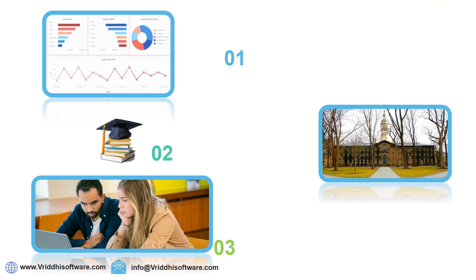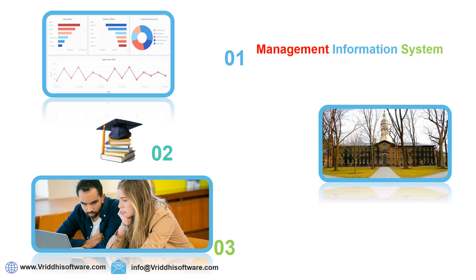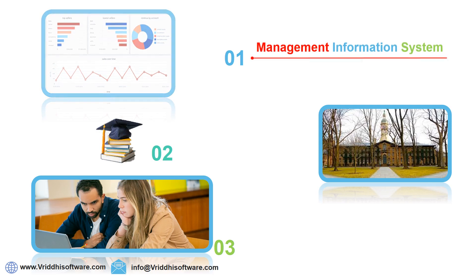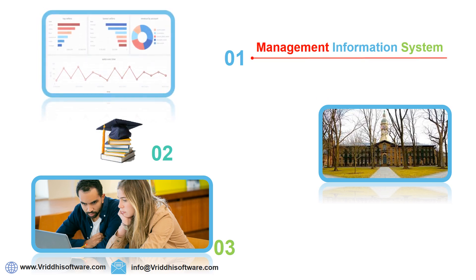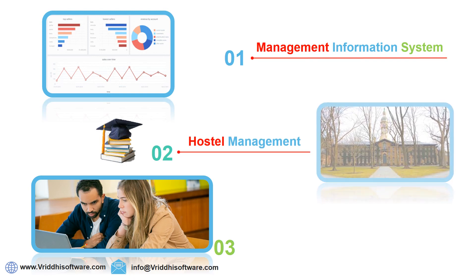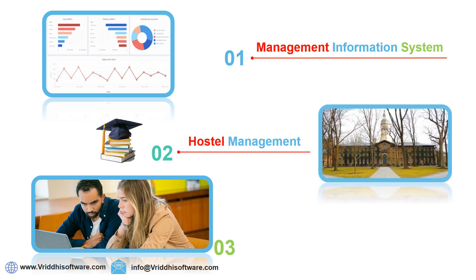Management information system: the facilities housed by the software must show recorded transactions and be able to create all forms of reports required by colleges on a daily basis. It helps to maintain effective overall college management. Hostel management: hostel-related functions must exist in the software, such as hostel admission, hostel fees, room-wise occupancy details, hostel-wise occupancy details, and a hostel deposit register for smooth functioning.